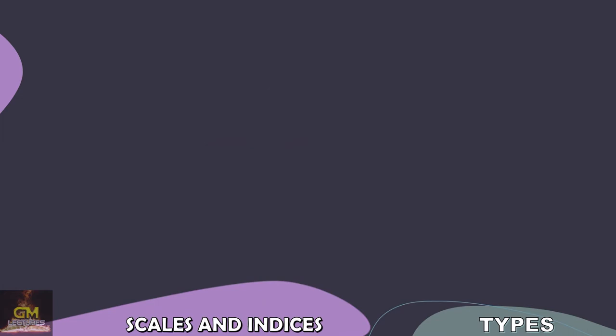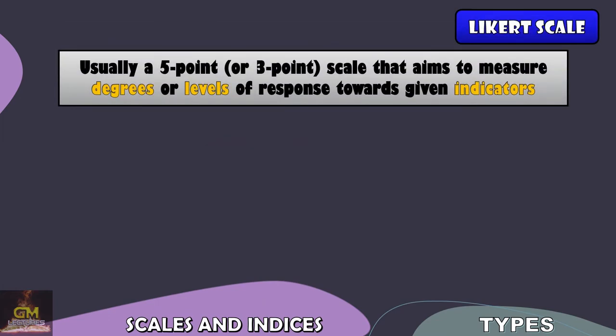Next, we have the Likert scale. The Likert scale is usually a five-point or three-point scale that aims to measure degrees or levels of response towards given indicators. Take note that the Likert scale is usually used to measure qualitative data, particularly those under the ordinal level of measurement.